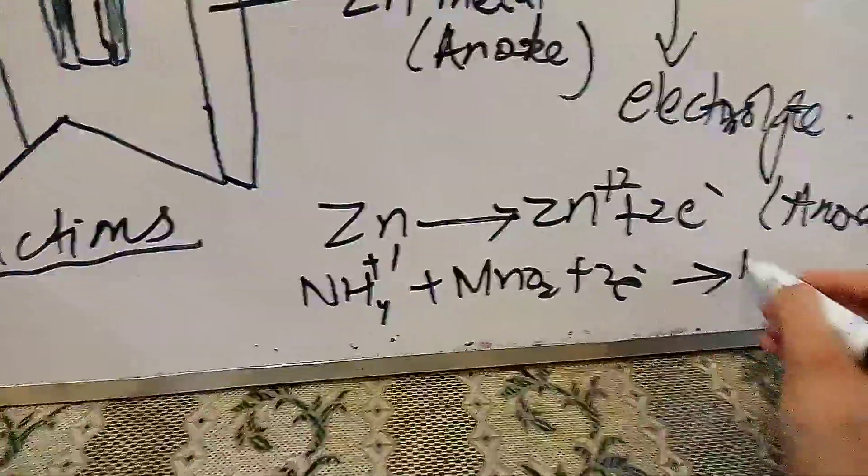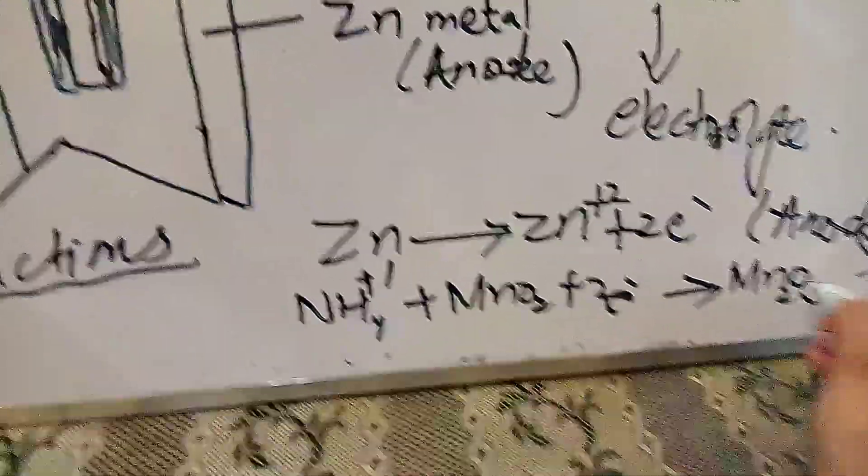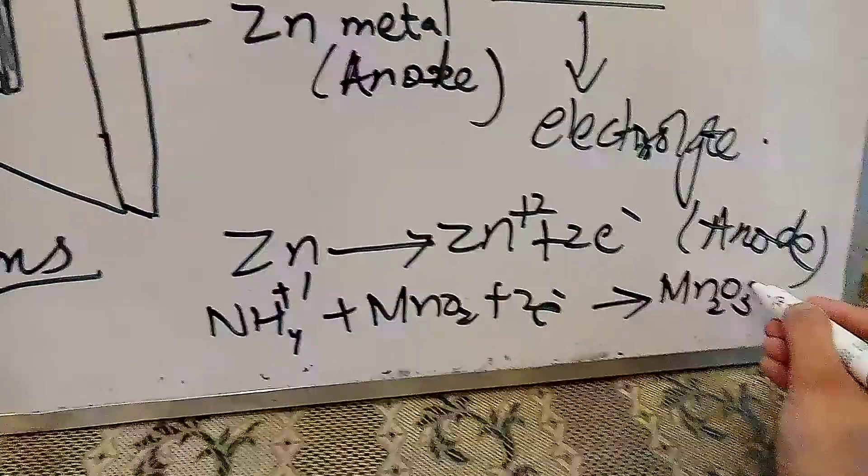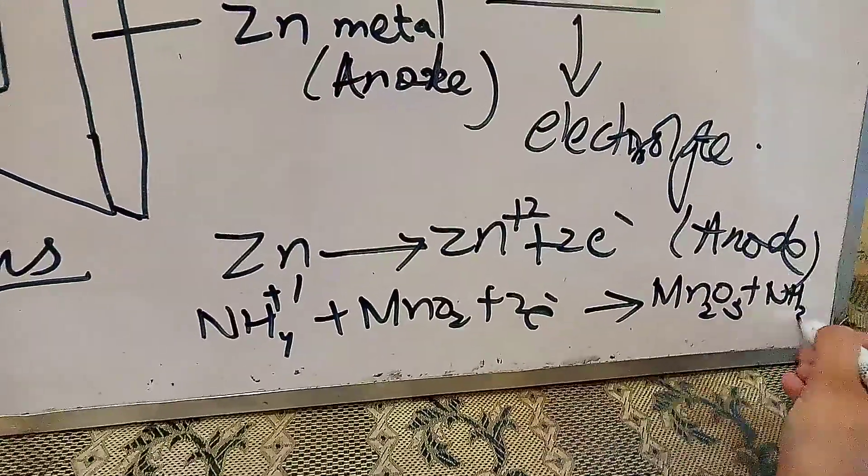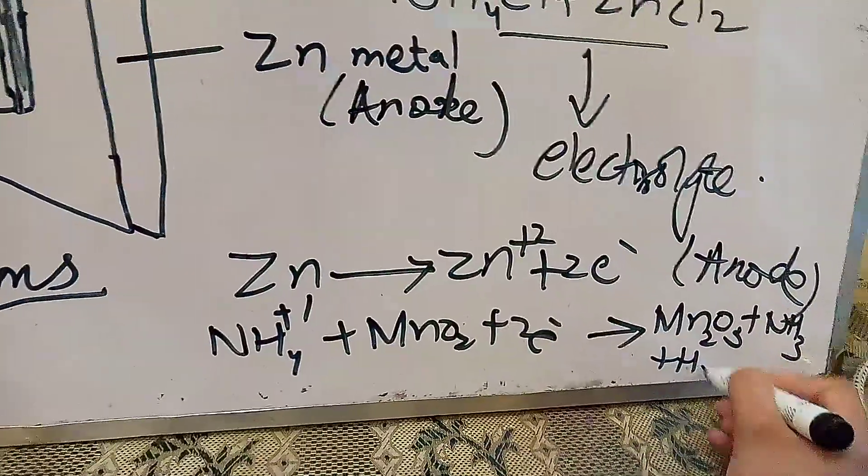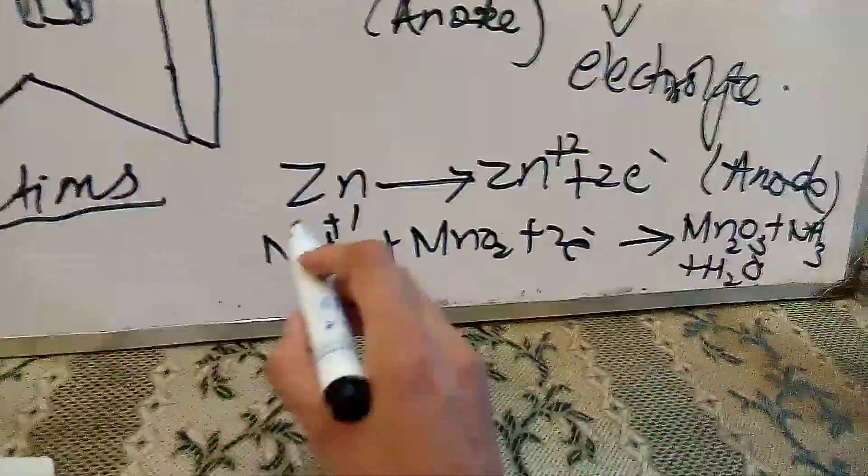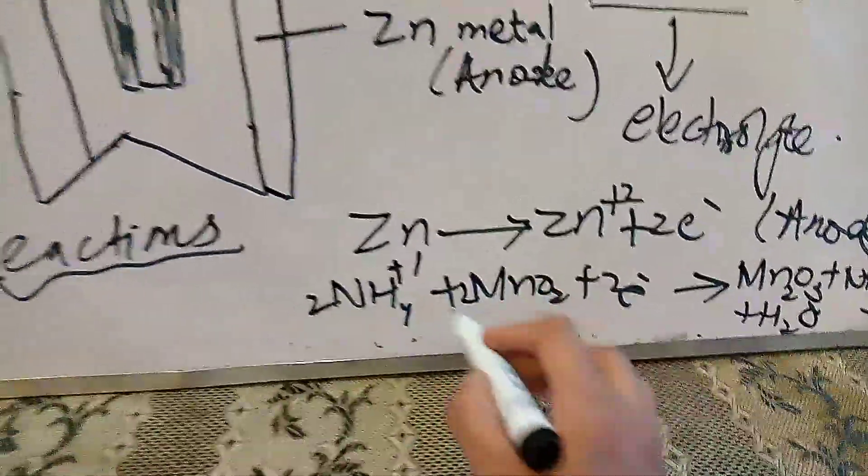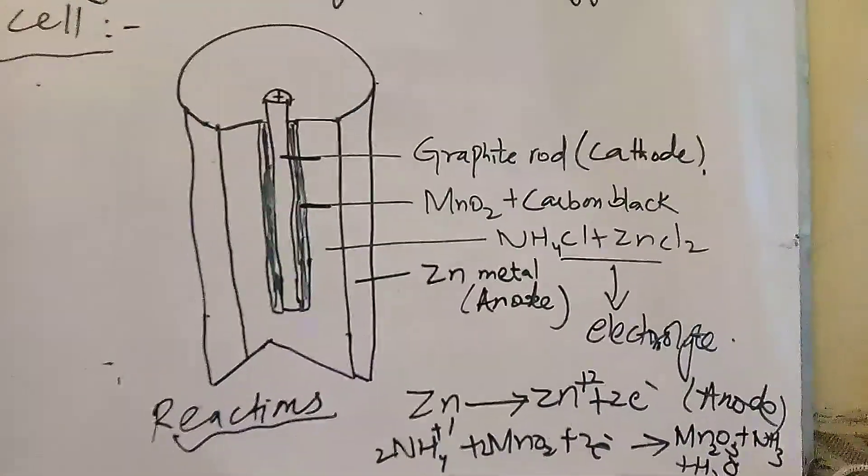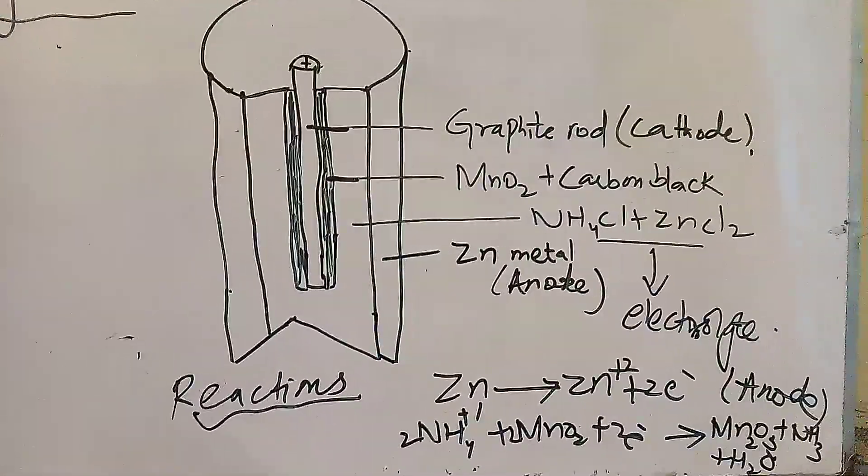We will basically have a reduction on the graphite rod. We have products like Mn2O3 plus ammonia plus water. So this reaction will take place at the cathode. These two reactions take place at the anode and cathode.